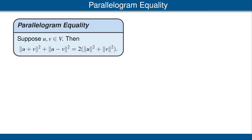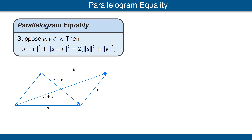Our last result in this video is called the parallelogram equality. It says that if u and v are any vectors in inner product space V, then ‖u + v‖² + ‖u − v‖² = 2(‖u‖² + ‖v‖²). This equality is called the parallelogram equality because of the geometric picture: in a parallelogram where two sides are represented by u and the other two parallel sides by v, the diagonals are u + v and u − v. Thus, the sum of the squares of the lengths of the diagonals equals the sum of the squares of the lengths of all four sides — a nice result.